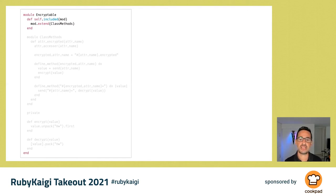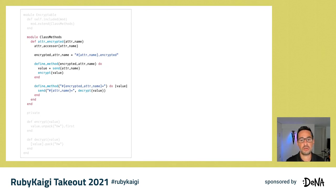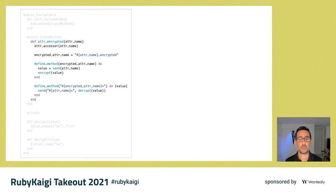Let's build the Encryptable module. The first thing is to add an included method. Since the Encryptable module will be included into our classes, we won't be able to add class methods through the module itself — in Ruby, when a module is included, only instance methods survive the trip. In order to add the attr_encrypted method on the CreditCard class itself, we use the module included hook to do a dynamic extend on the target class with a ClassMethods module. The ClassMethods module defines one method named attr_encrypted. When called, it first defines an accessor on the class using the attribute name — so for CreditCard, the attribute name would be number, giving us a number getter and setter.